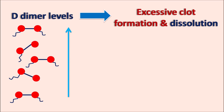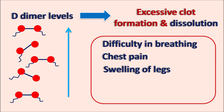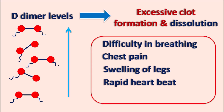The D-dimer test is prescribed when certain symptoms are observed in patients: difficulty in breathing, chest pain, swelling of legs, rapid heartbeat, and persistent cough. If any of these symptoms are observed and there is a significant risk of abnormal clot formation, the D-dimer test is going to be prescribed.